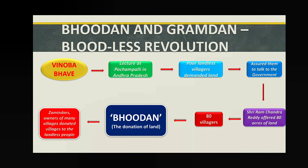Next topic: distribution of agricultural land to landless villagers or landless farmers. This topic is called Bhoodan and Gramdan. 'Bhu' means land, 'dan' means donation, 'gram' means village. So Bhoodan means donation of land and Gramdan means donation of a village. From the name we can guess that someone has donated land or a village to others. This is also called a bloodless revolution — we will find out why.